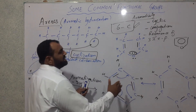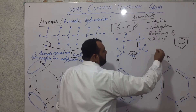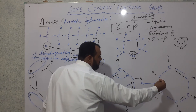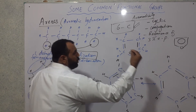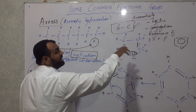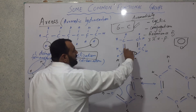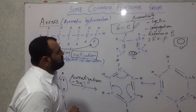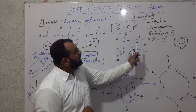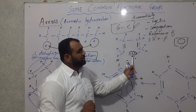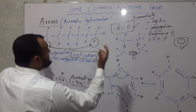When benzene rings have substitution, monosubstitution examples include toluene, ethylbenzene, cyclohexanol, and phenol — all these compounds fall under aromatic concern. For five-membered heterocyclic examples: furan and thiophene. When a nitrogen atom is on the ring, we have pyrrole — a five-membered ring with nitrogen — and pyridine, a six-membered ring with a nitrogen atom.